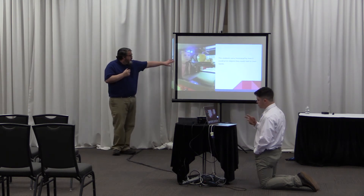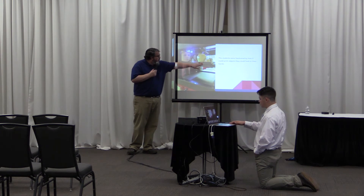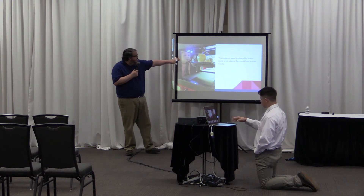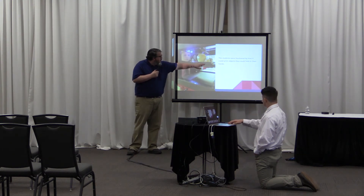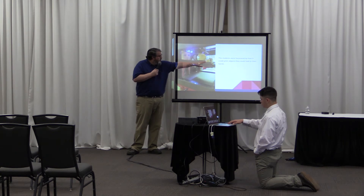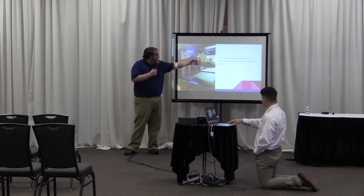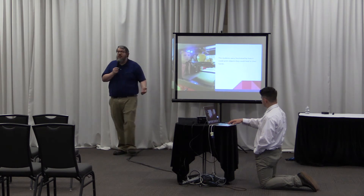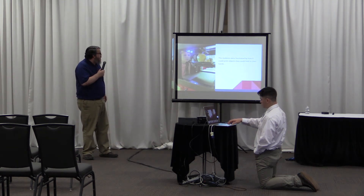Here's a student watching another object get printed. This one was a dodecahedron with different numbers on all the faces, and there's a little cube with different operations on it. They can roll the dodecahedron once, then roll the operations cube, and come up with a problem to practice math facts.